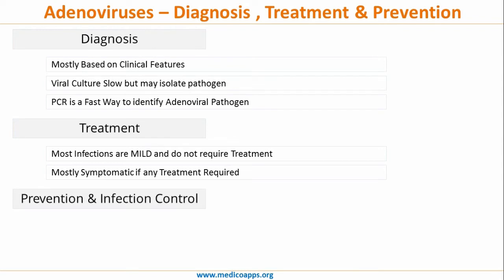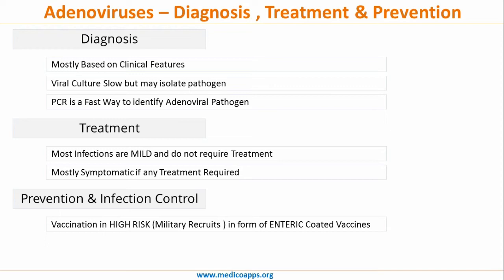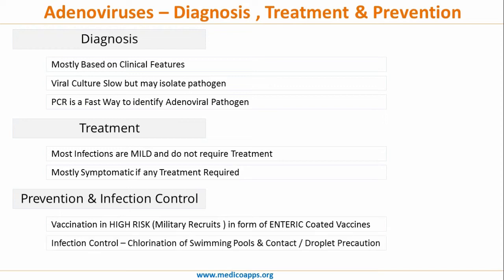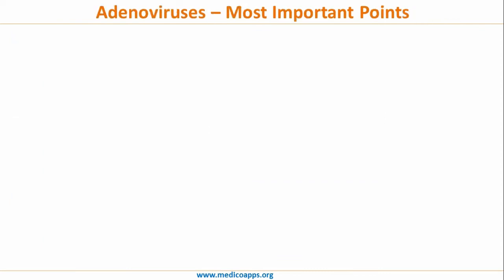Prevention and control is very important. Vaccination is given to high-risk individuals — generally military recruits — in the form of an enteric-coated vaccine. Infection control includes chlorination of swimming pools, contact precautions, and proper hygiene measures.